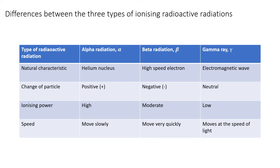For the ionizing power, alpha has high ionizing power, while beta has moderate ionizing power, and gamma has low ionizing power. For the speed of the radiation, alpha moves slowly, while beta radiation moves very quickly, and gamma moves at the speed of light.